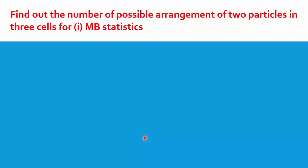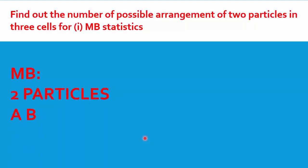We now take a numerical example from a WBUT question paper: find out the number of possible arrangements of two particles in three cells for Maxwell-Boltzmann statistics. You have two particles and three cells, and you have to calculate the number of possible arrangements, i.e., the number of microstates. In Maxwell-Boltzmann statistics, as discussed in Lecture 1, the particles are distinguishable. So the two particles are named A and B.